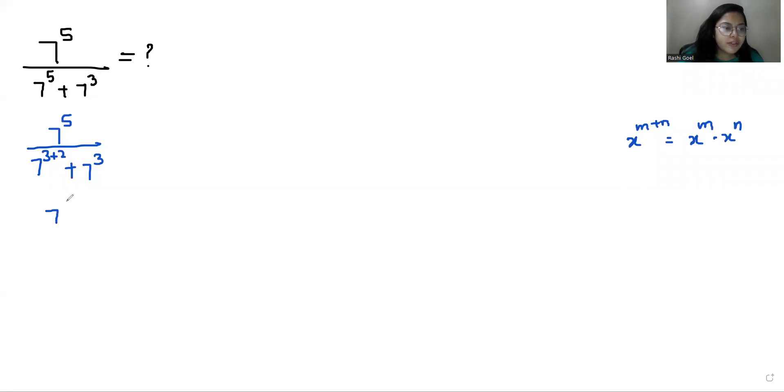So 7 power 5 by 7 power 3 times 7 power 2 plus 7 power 3. Now from the denominator I can take 7 power 3 as common, so what is left is 7 power 2 plus 1.